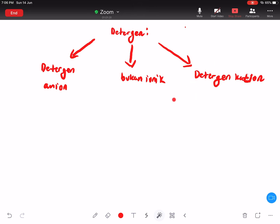From the name itself, you already understood. Anion stands for the detergent that is negatively charged. Non-ionic detergent has nothing, no charge. And cationic detergent has a cation, positively charged. So, ingatlah ya, ini positif, ini negatif, ini nothing, no charges.